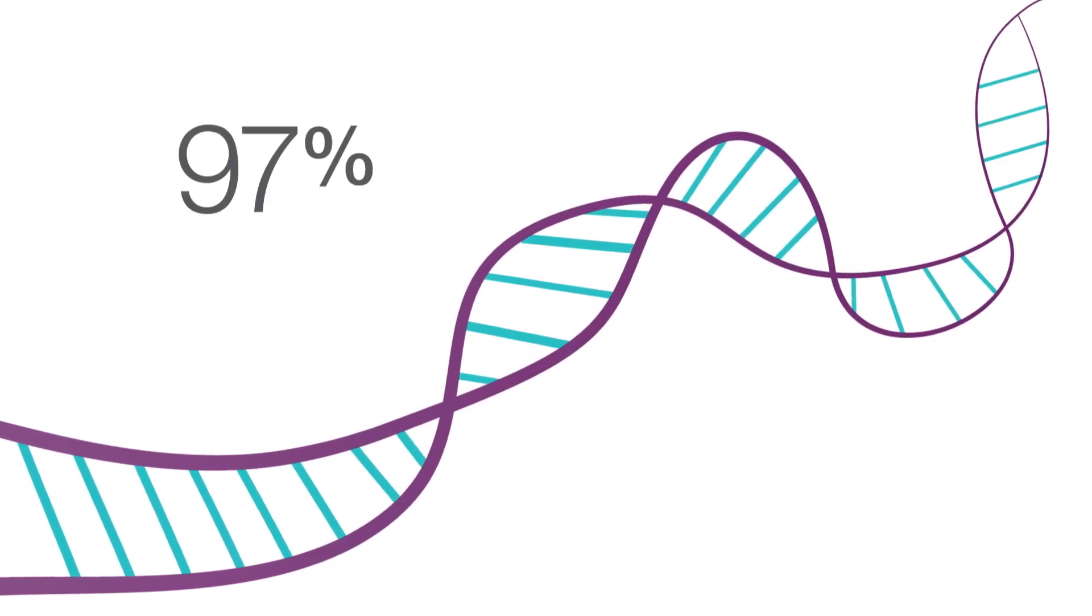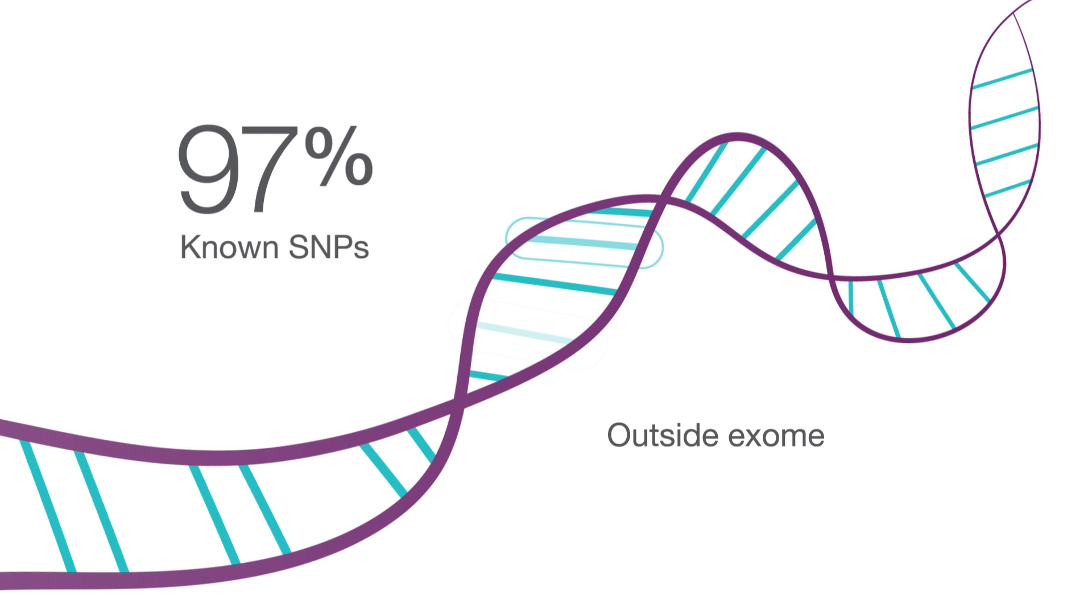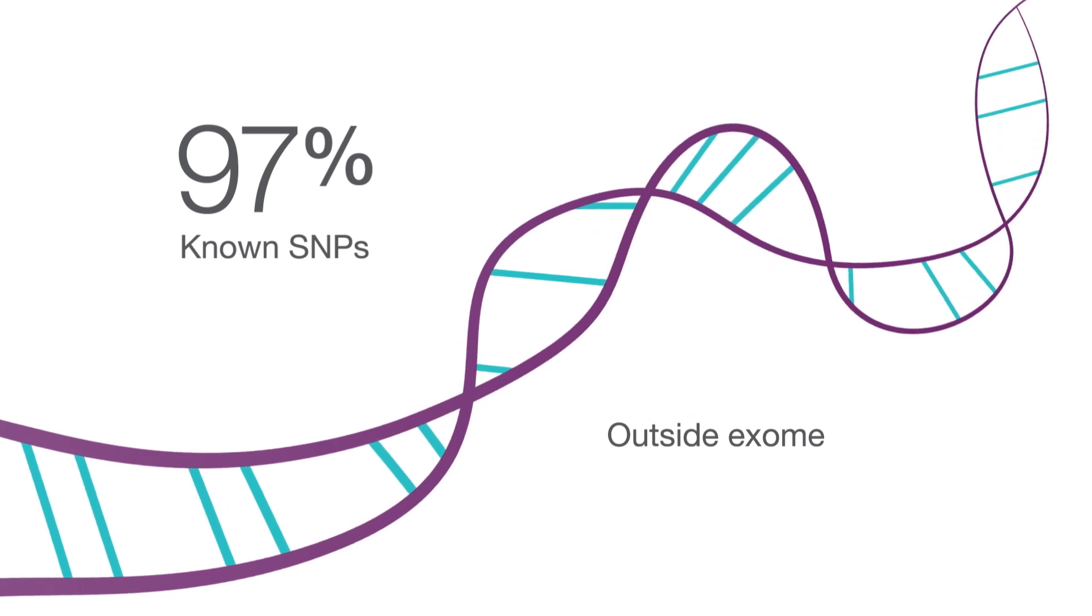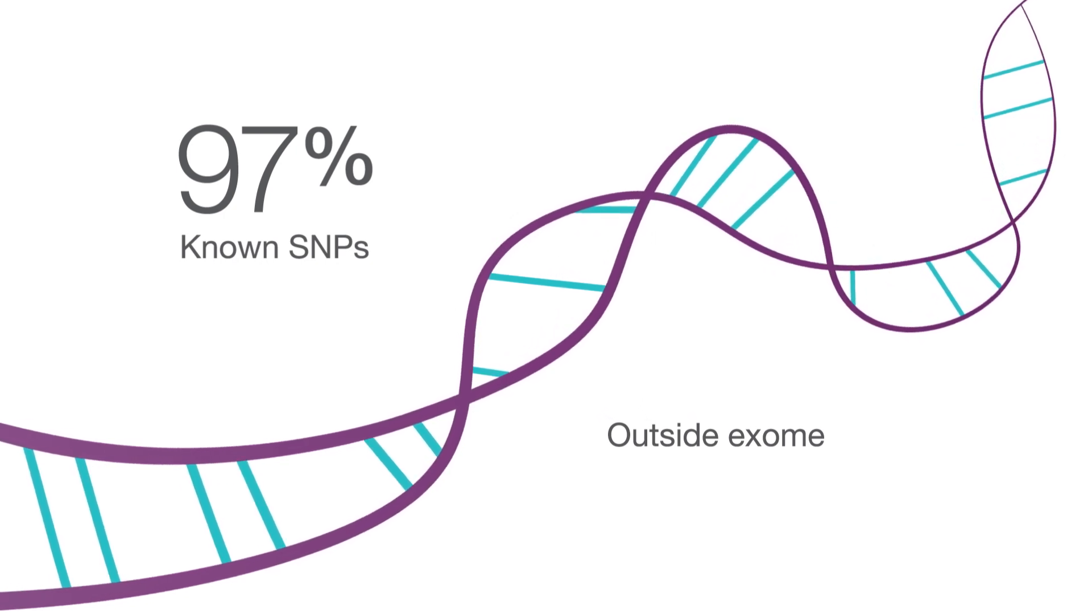Genotyping will not be enough. Then we said maybe we'll do genotyping and whole exome sequencing on the phenotype extremes. We said no, even that's not going to be enough because we're going to miss a lot. 97% of the known SNPs were outside the exome. I was able to move to whole genome sequencing in the entire population.